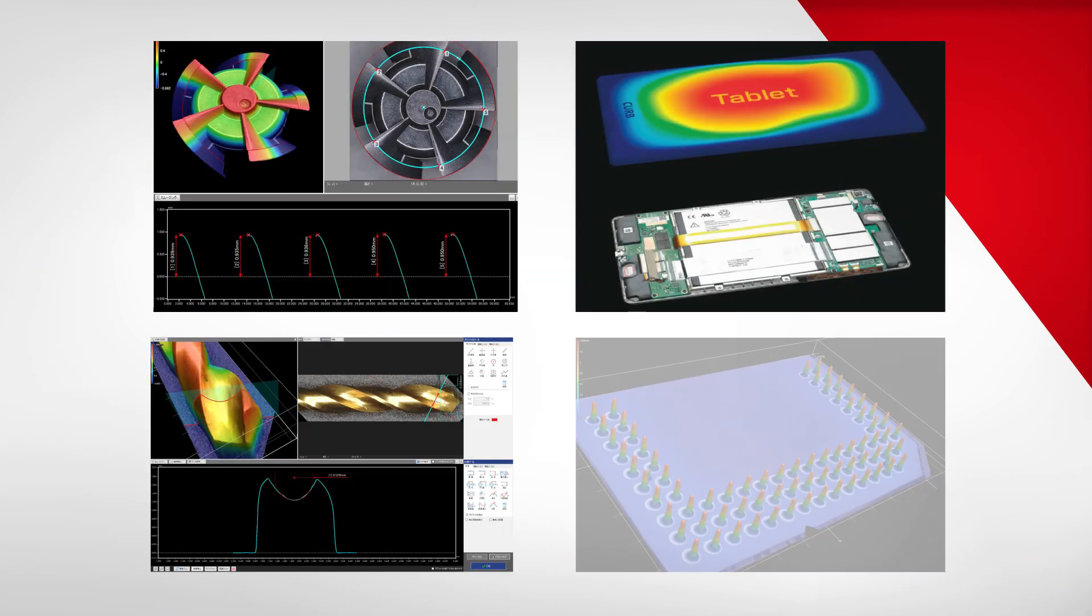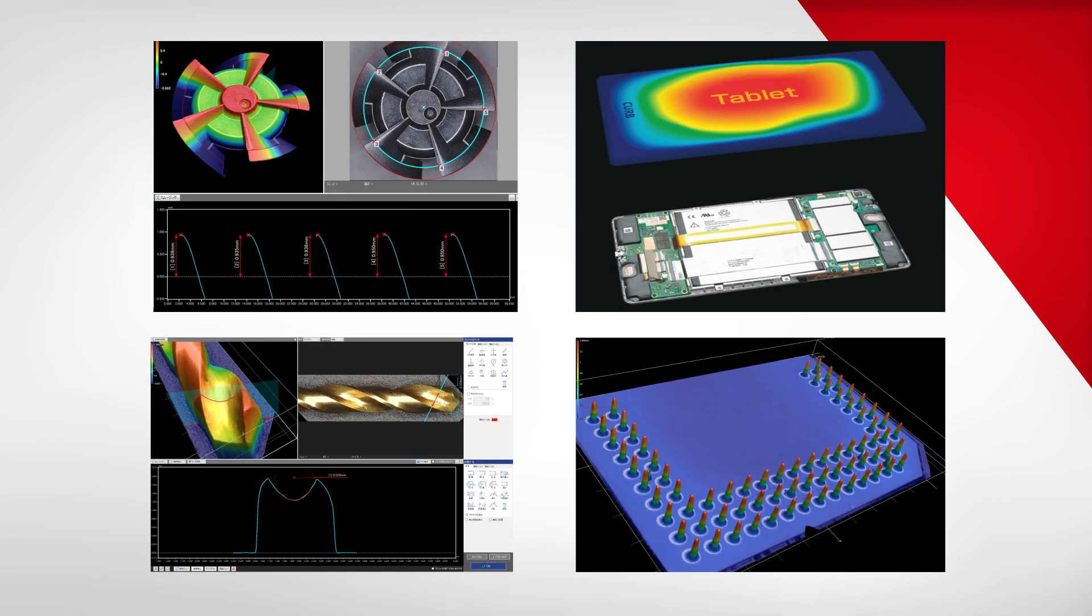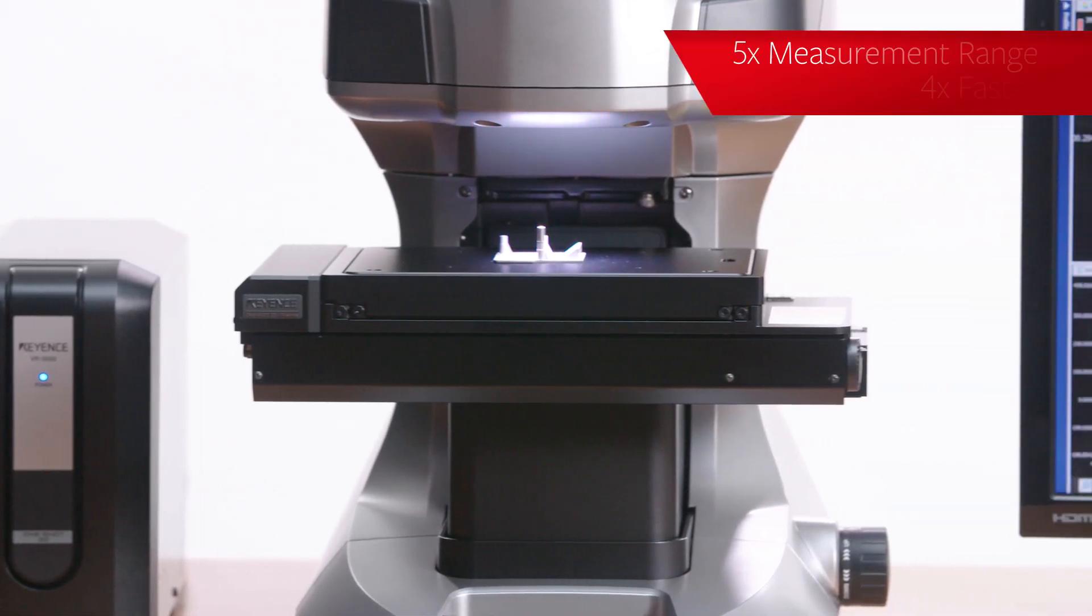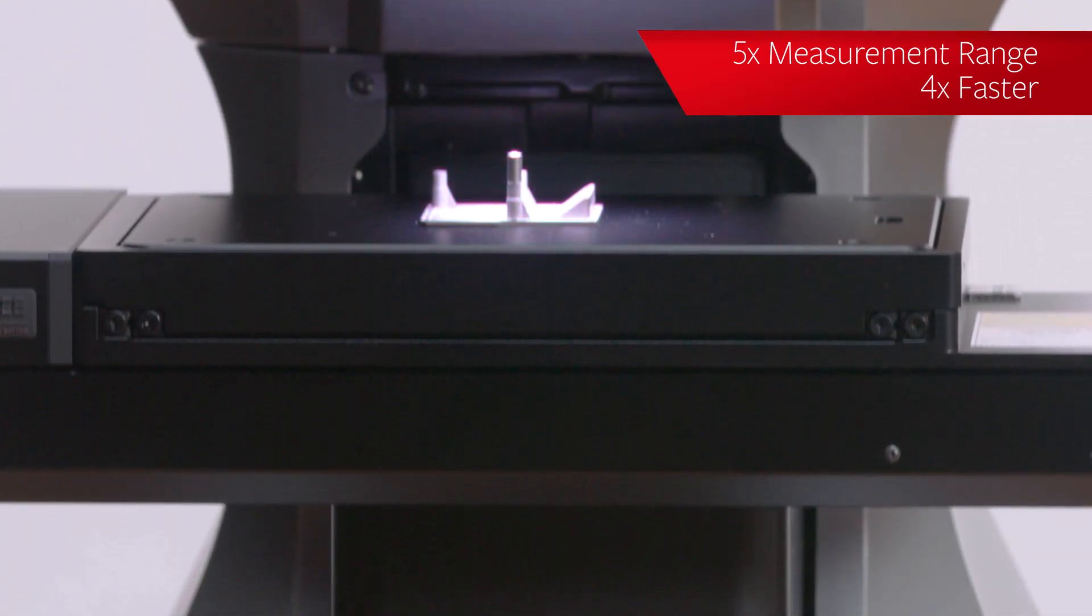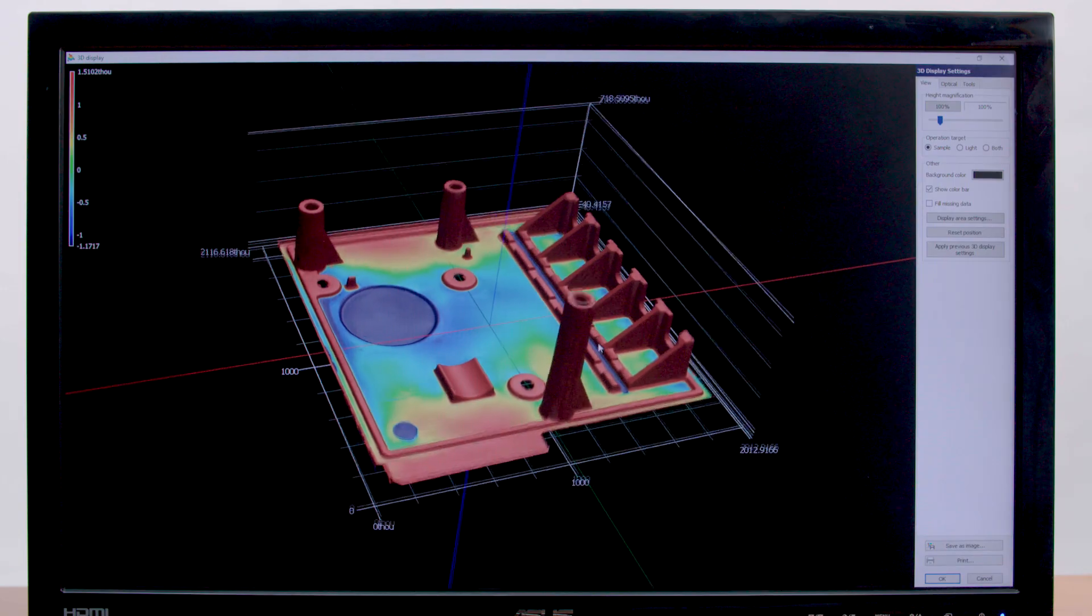Keyence has applied its success in sensors, optics, and signal processing to the metrology environment. The VR5000 is now able to scan five times the measurement range, four times faster, providing rapid 3D imaging and measurement with a single device.